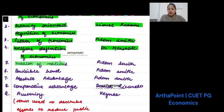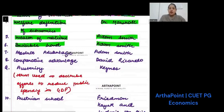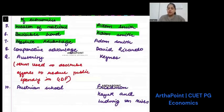Wealth of Nations was given by Adam Smith. Invisible hand was given by Adam Smith. Absolute advantage was given by Adam Smith. Comparative advantage was given by David Ricardo.